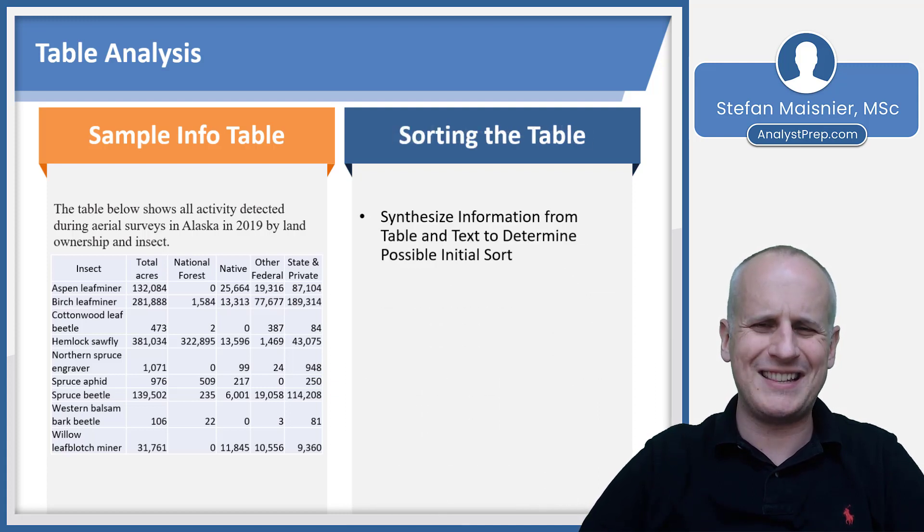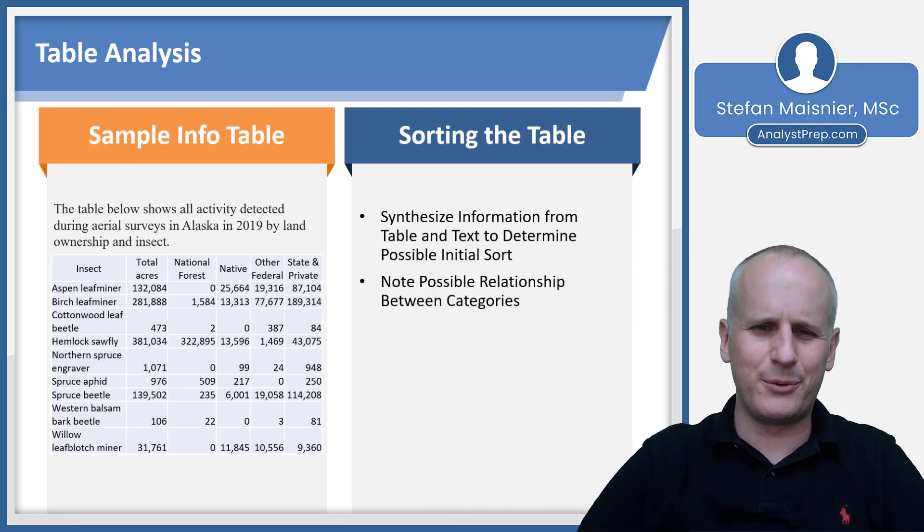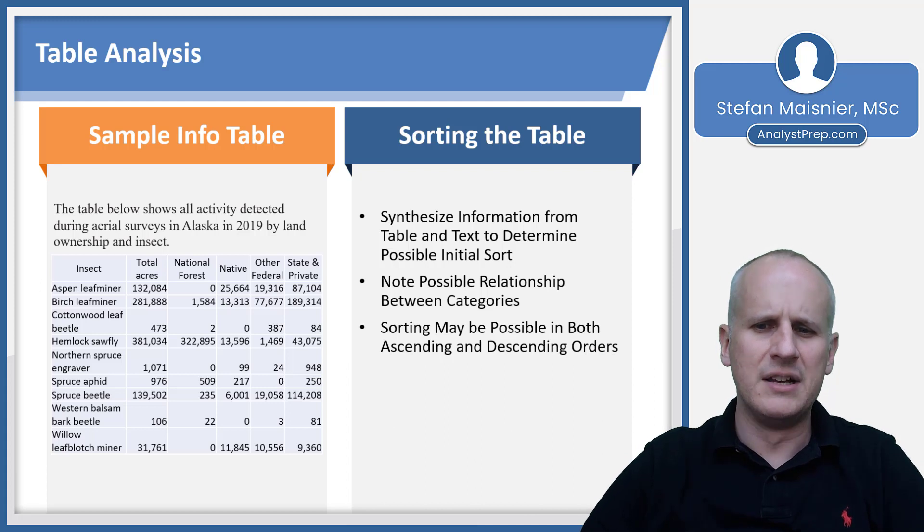How do we sort the table? We want to synthesize the information from the table and the text to determine a possible initial sort. And we can see the relationship between the categories. It's all about the number of acres here in this table, and we've got the insects that are apparently detected within some acreage in these different types of land.